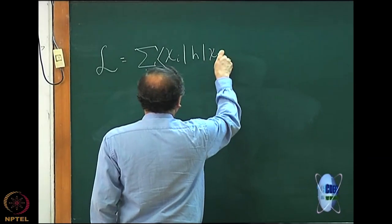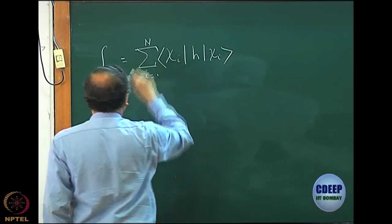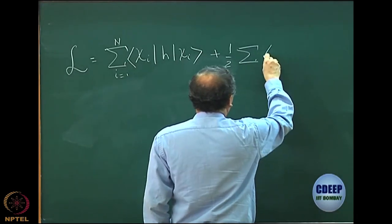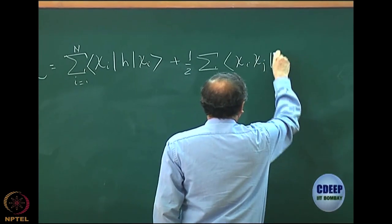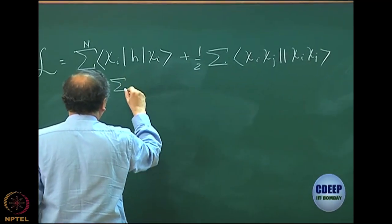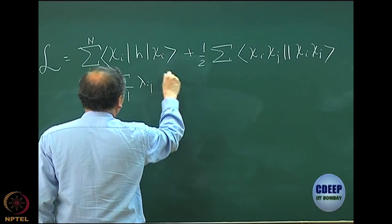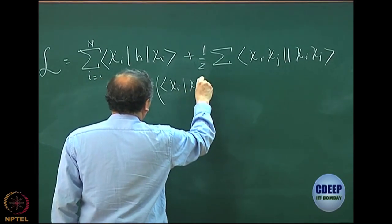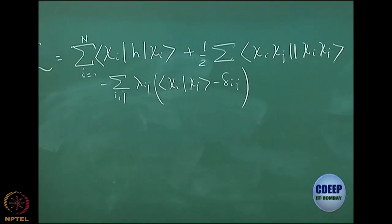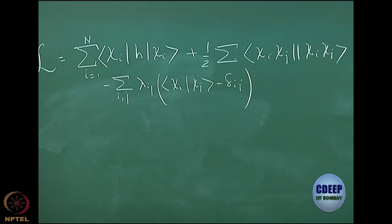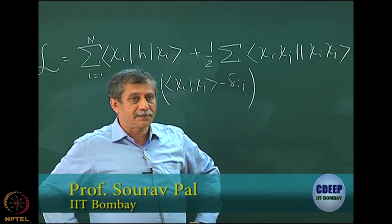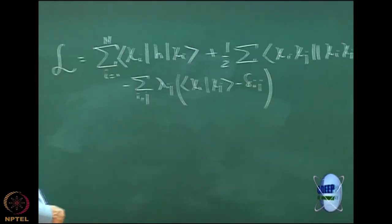The energy is: sum over all n spin orbitals of ⟨χᵢ|h|χᵢ⟩ — this is the one-particle term — plus half of the anti-symmetrized two-particle term. I have not written the exchange or Coulomb explicitly; I have used the anti-symmetrized mechanism. Eventually we will expand it.